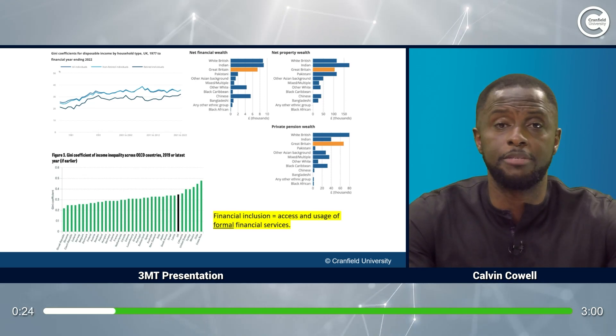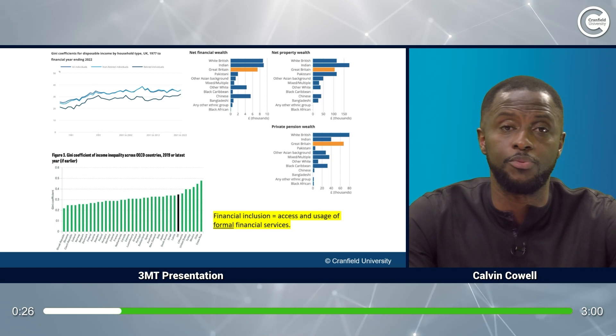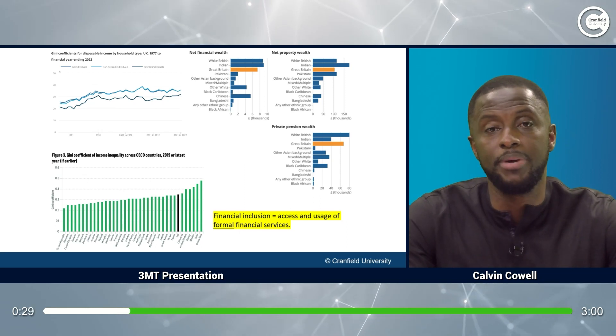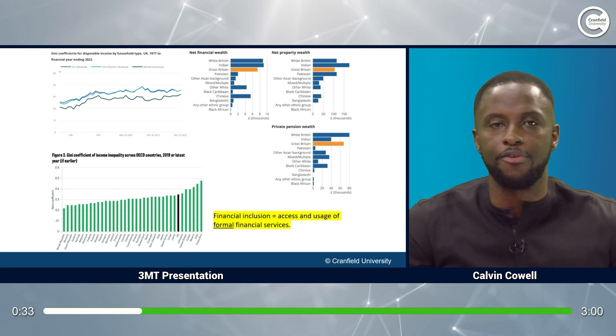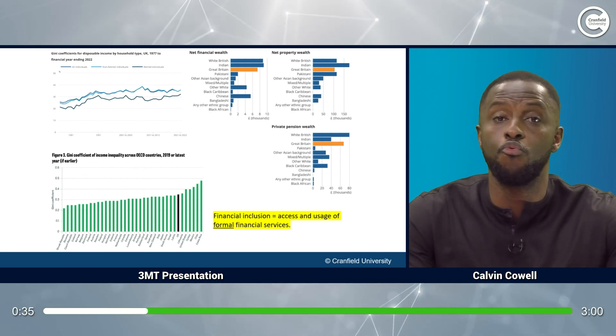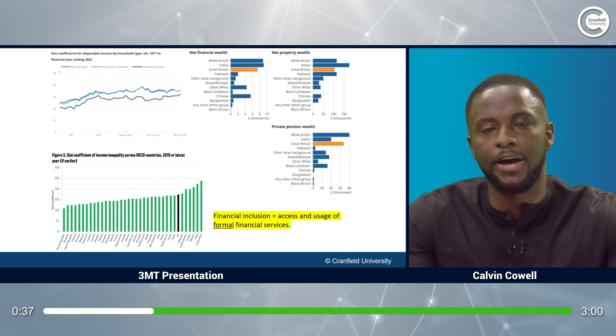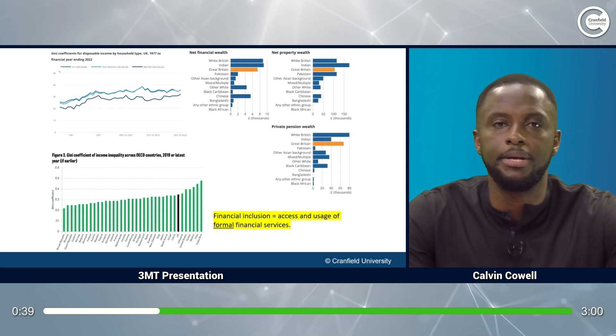Significant economic disparities exist between ethnic minorities within the UK and uniquely for Africans and Caribbeans. This is despite many of the common barriers, for example, language barriers, religious beliefs, regional location, and in the case of Africans, educational levels being absent.